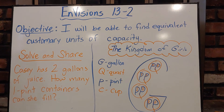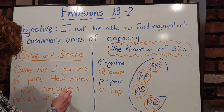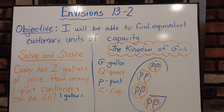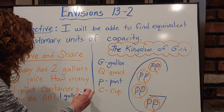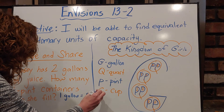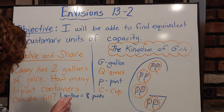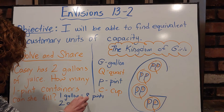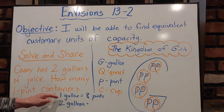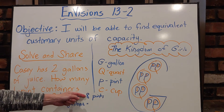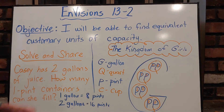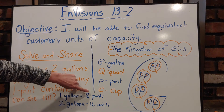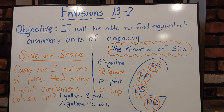Back to our solve and share: Casey has two gallons of juice. How many one-pint containers can she fill? In one gallon there are eight pints. So for two gallons, we double it — eight times two equals sixteen pints. So Casey can fill sixteen one-pint containers.